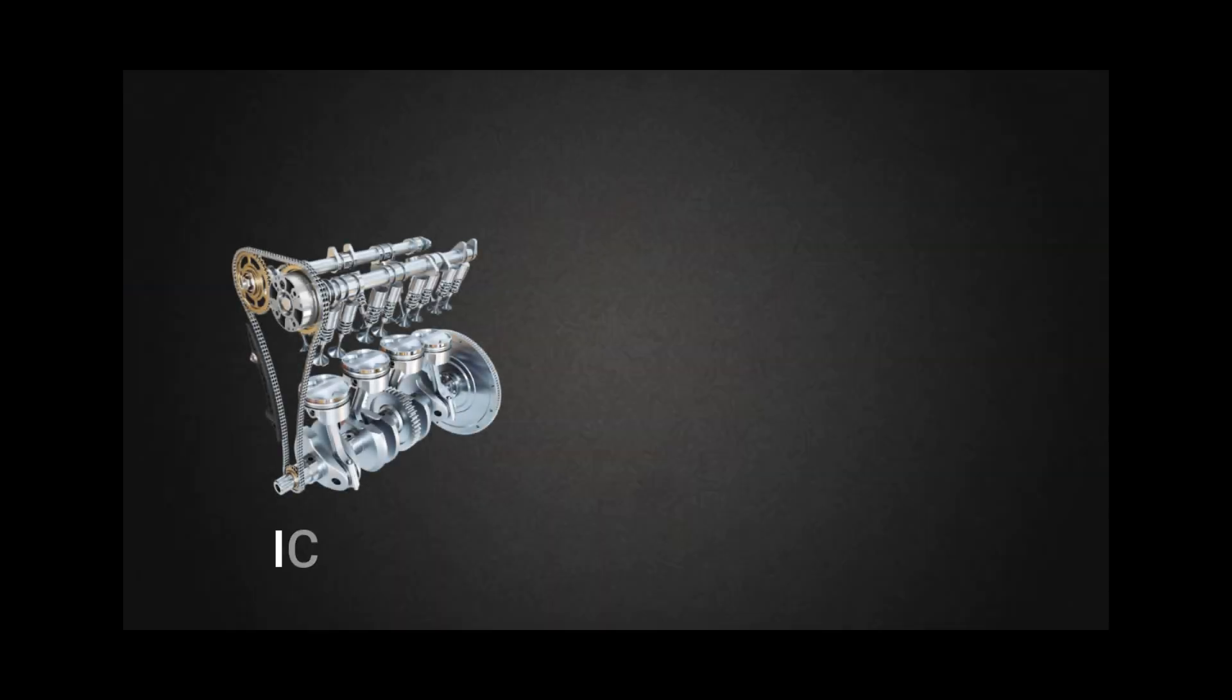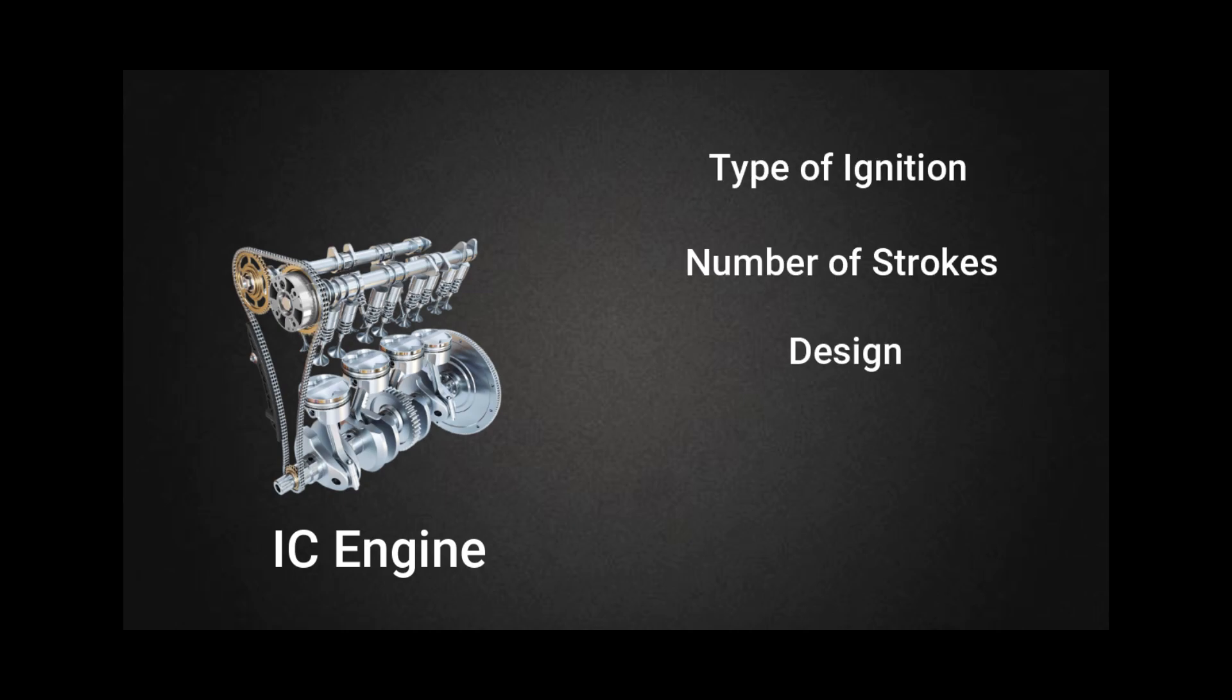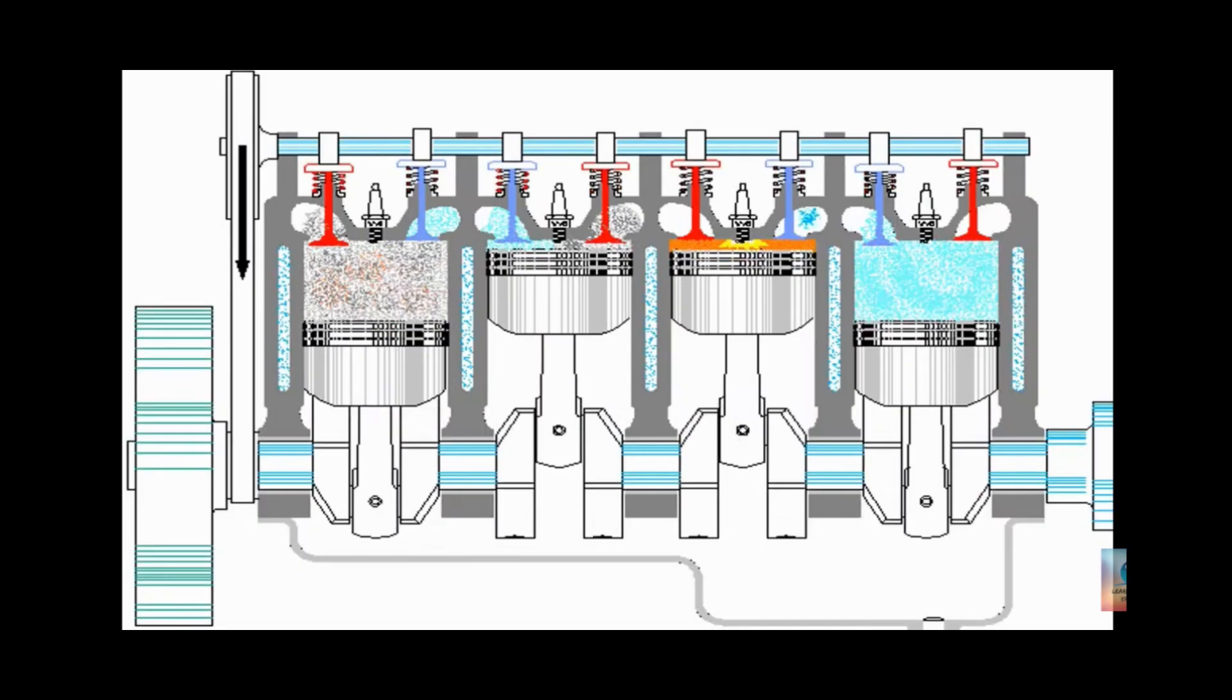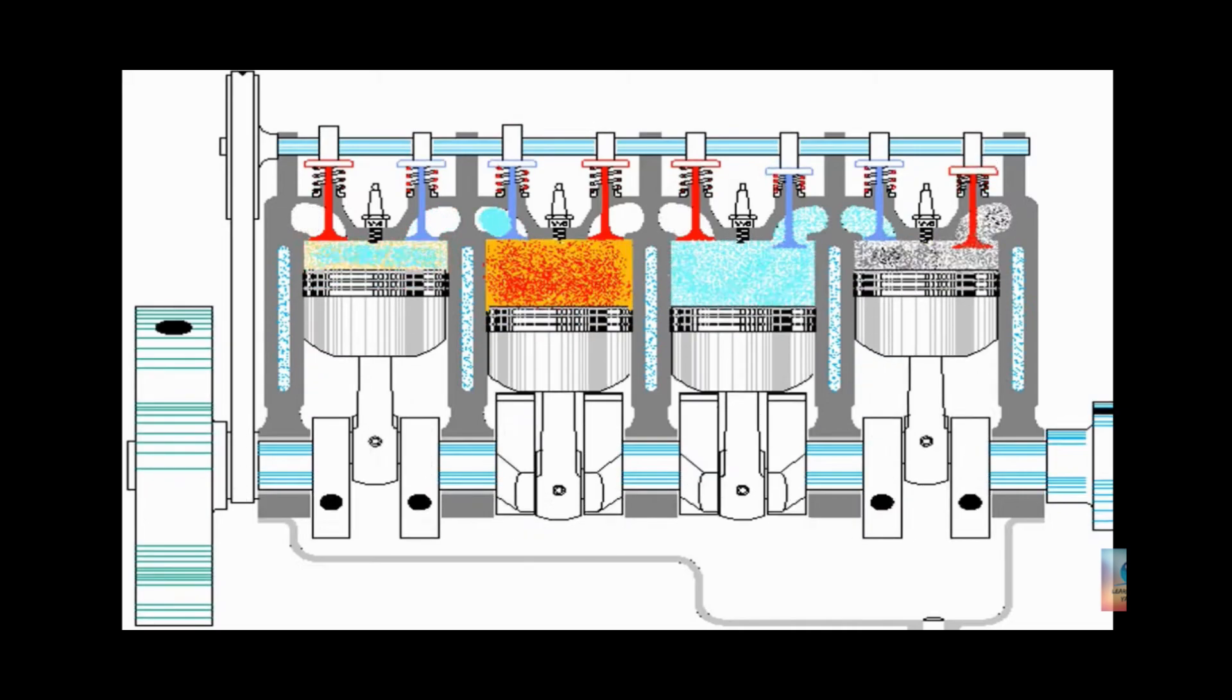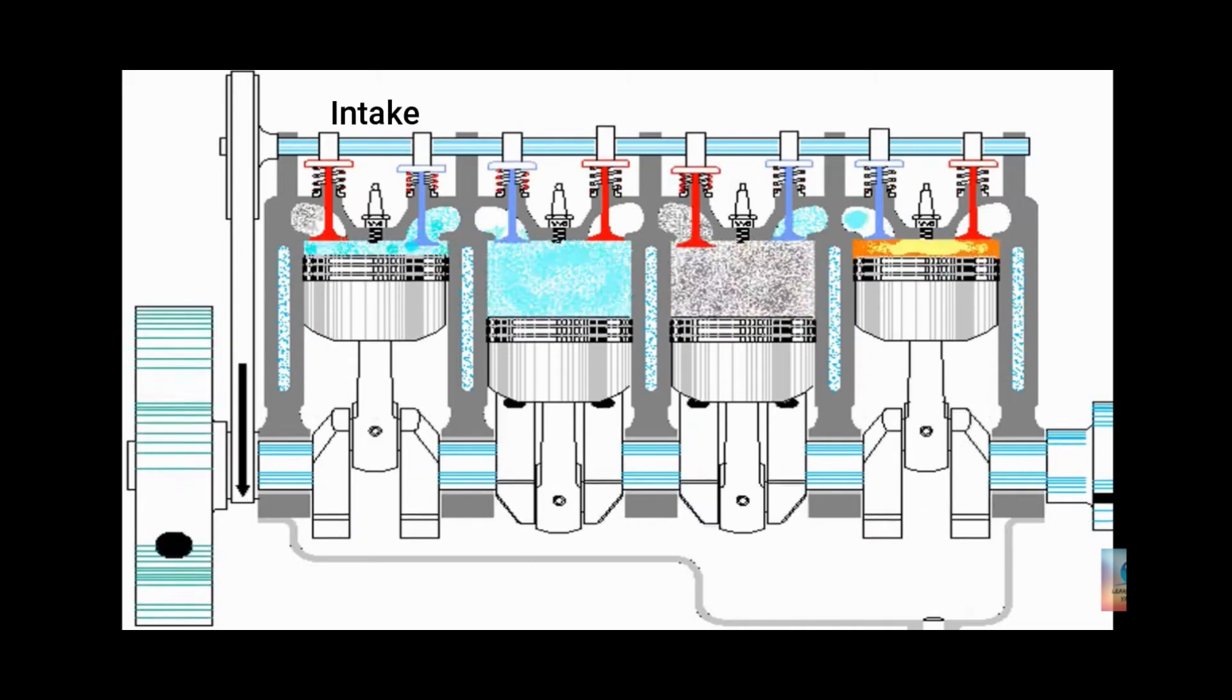An internal combustion engine can be categorized on many bases, for instance type of ignition, number of strokes, design and so on. To understand the steps of how a four-stroke internal combustion engine works, the four strokes are intake, compression, power, and exhaust.